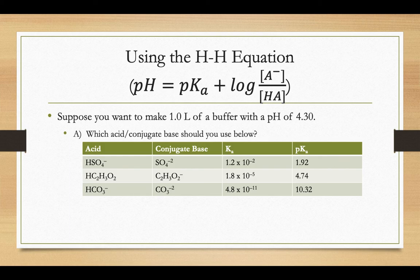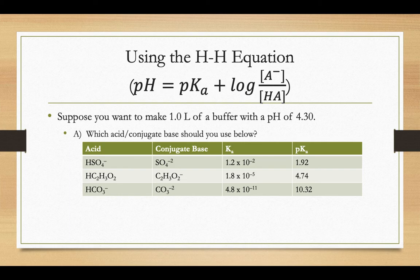Now that we've seen the Henderson-Hasselbalch equation, we start to see how we could fine-tune it with those ratios of A minus and HA. How can we put all this information together?